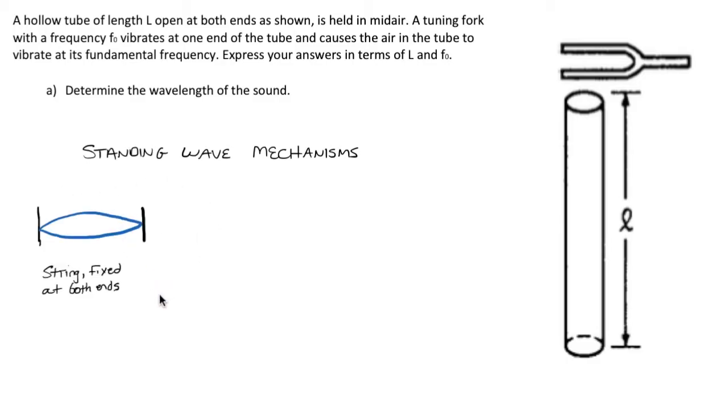One of the archetypes is such that you'd find on a string instrument, a string fixed at both ends. Another one that you find, like a wind instrument, is an air column open at both ends.